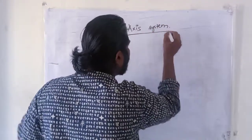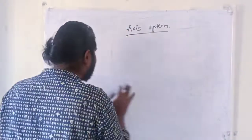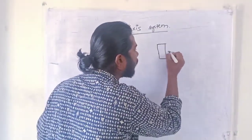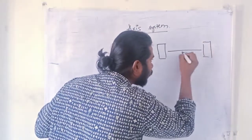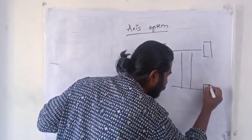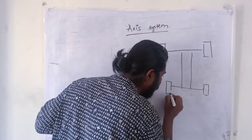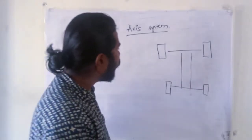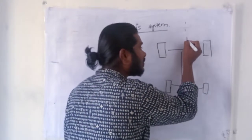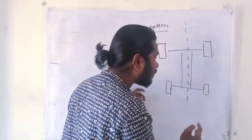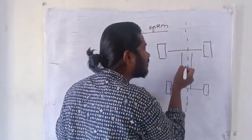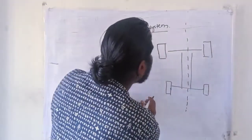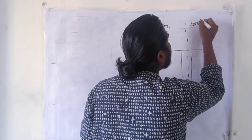The axis system — we all know X, Y, Z. But if we go with the axis system of the vehicle, this is the terminal logic of the subject you are dealing with. If this is my four-wheeled vehicle, the axis passing through the center of the vehicle in the front and rear direction is known as the longitudinal axis.